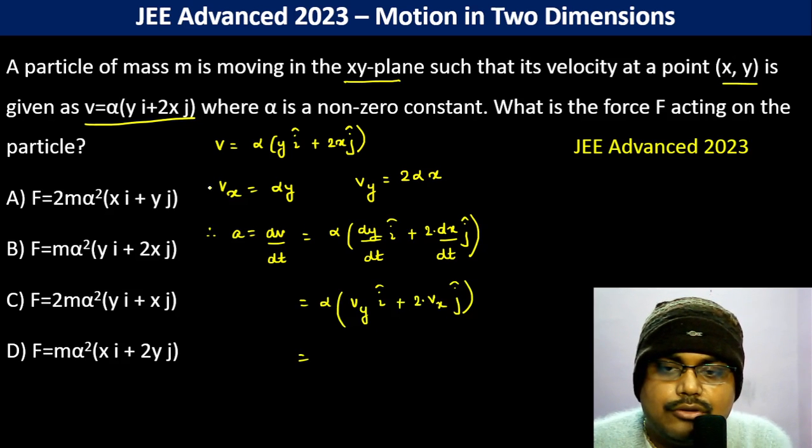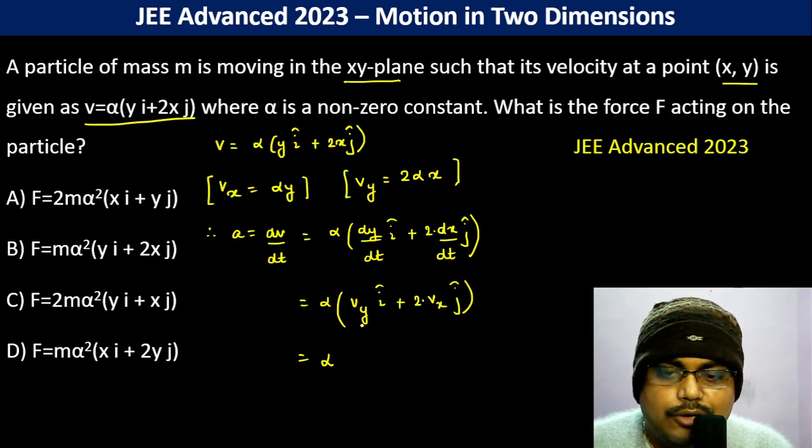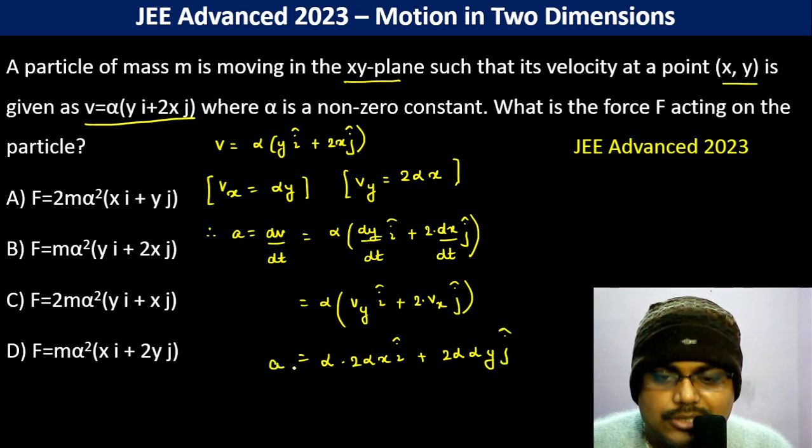Now we already know vx and vy. So this is alpha into vy which is 2 alpha x i cap plus 2 alpha into vx which is alpha y j cap. So this is the acceleration.